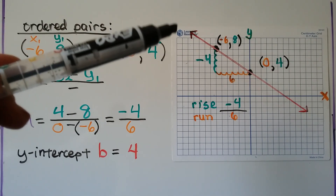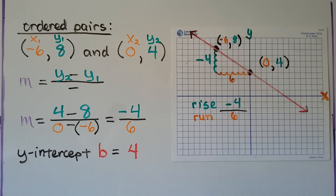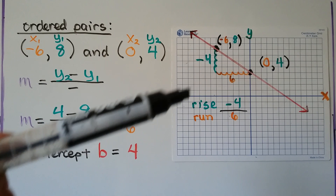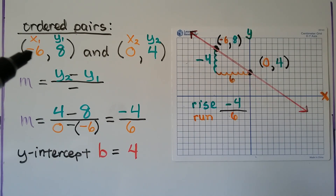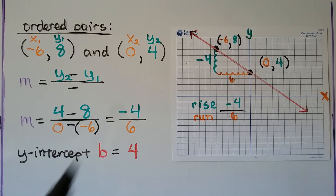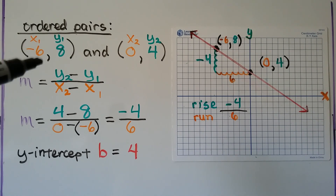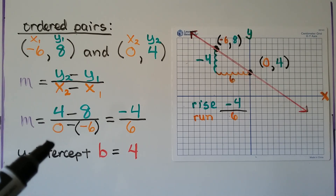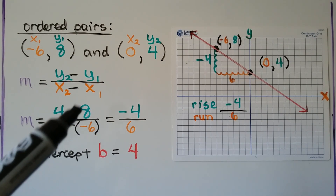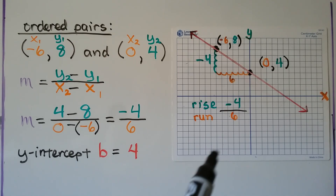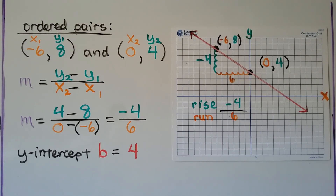Looking at the next graph, we see it's falling to the right, so we know our slope is going to be a negative number. The change is going down by 4 and going across by 6, so our rise is negative 4 and our run is 6. Using the ordered pairs, we have negative 6 for x-sub-1 and 8 for y-sub-1. Using the slope formula, we have 4 minus 8 over 0 minus negative 6. That gives us negative 4 over positive 6, just like we got by counting.